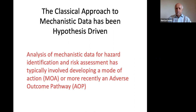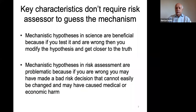The classical approach to mechanistic data has been hypothesis-driven, and as scientists we all love hypotheses. It typically involves developing a mode of action, and more recently this has been replaced by the adverse outcome pathway concept, which is really a modification of the mode of action idea. The problem with that for regulatory purposes is that a mechanistic hypothesis in science is really beneficial — if you're wrong, you modify your hypothesis and get closer to the truth — whereas in risk assessment or hazard identification this is problematic.